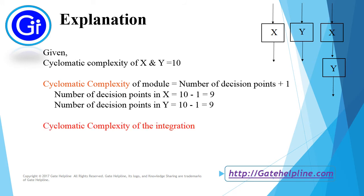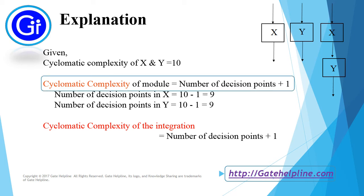So for cyclomatic complexity of the integration, according to this formula, that is number of decision points plus 1, will be 9 plus 9 plus 1.